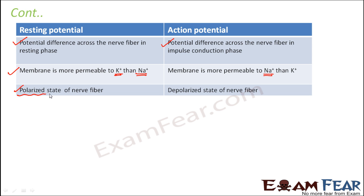Resting potential refers to the polarized state of a nerve fiber. During the resting phase, the neuron is not doing anything — not conducting any impulse — so it is in the polarized state, where the inner side of the membrane is negatively charged and the outer side is positively charged. Whereas action potential refers to the depolarized state because the polarity gets reversed. And that action potential keeps moving from one region to the neighboring region.